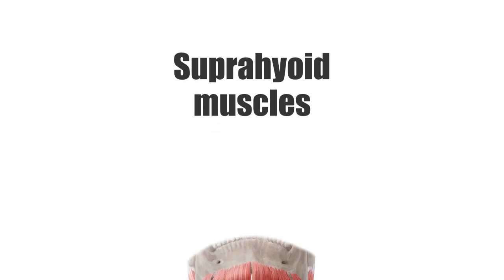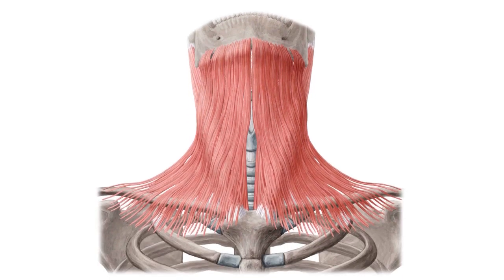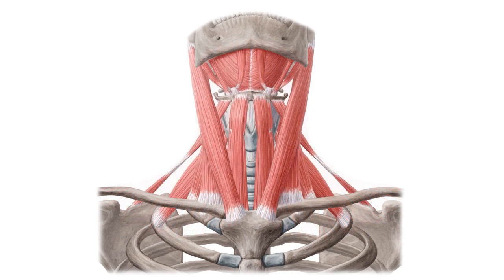Here we can see an image of the muscles of the neck from an anterior view. If I remove platysma, we can now see several groups of muscles. We can see sternocleidomastoid here, the infrahyoid muscles here, and the muscles we are going to be focusing on today, the suprahyoid muscles.